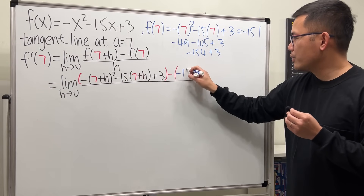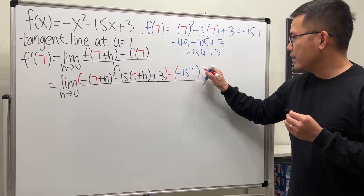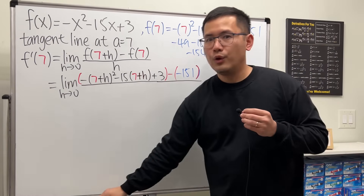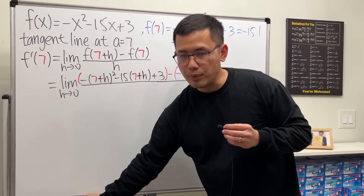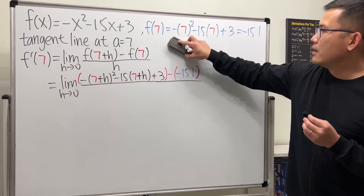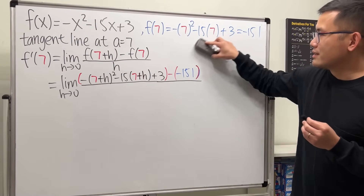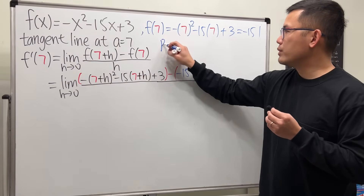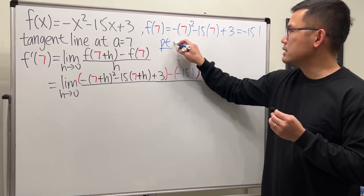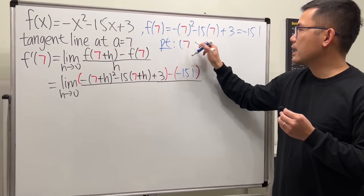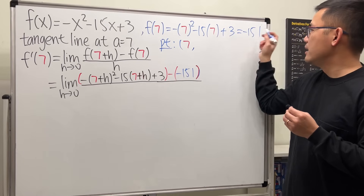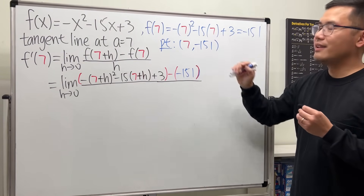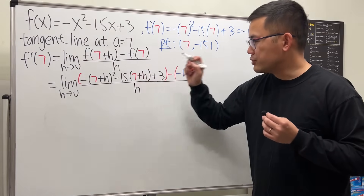Once we compute f(7) = -151, that will go right here in the expression. This also tells us the point that we want, which is (7, -151), over h.